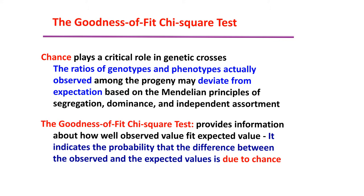In the normal, not-perfect world, you only obtain a certain number of individuals in the F2 generation. Even though the number can be large — a thousand, two thousand, or even five thousand as Mendel counted — it is still not indefinite and there is still chance for error. So instead of a perfect 3-to-1 ratio, you might get 2.8-to-1, or sometimes even 2.4-to-1 or 2-to-1.